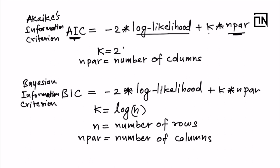So k is 2 when you are calculating AIC, and the same k is log of n, where n is the total number of rows in the data, when you are computing BIC. So Bayesian information criterion is basically using a k value which is different from the AIC.